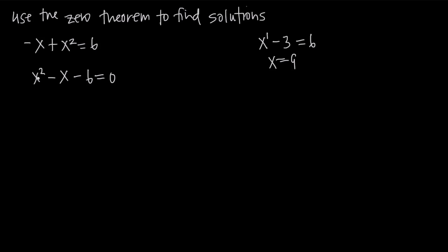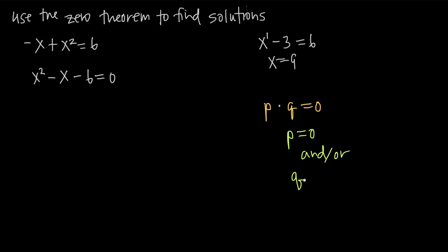Finding the solutions to this quadratic equation is going to be more complicated than finding the solution to a linear equation, and that's where the zero theorem comes in. The zero theorem tells us that when we have an equation p times q equals zero, then we know that either p equals zero and/or q is equal to zero.